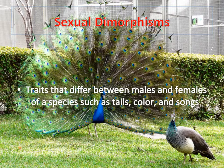Sexual dimorphisms are traits that differ between males and females of a species, such as tails, color, and song. In the lizard, there's color differentiation; in peacocks, elaborate tails; and in frogs, males sing while females remain quiet. The difference between male and female peacocks illustrates how much energy goes into making these structures.